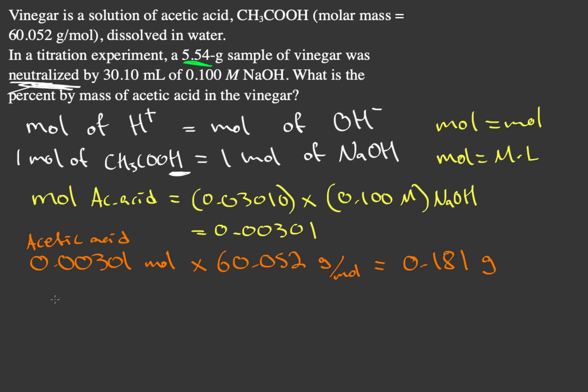So let's find our percent mass. Our percent mass will just equal 0.181, our part, divided by our whole, which is 5.54, grams over grams, and then just multiply by 100%. And this gives us 3.26%.